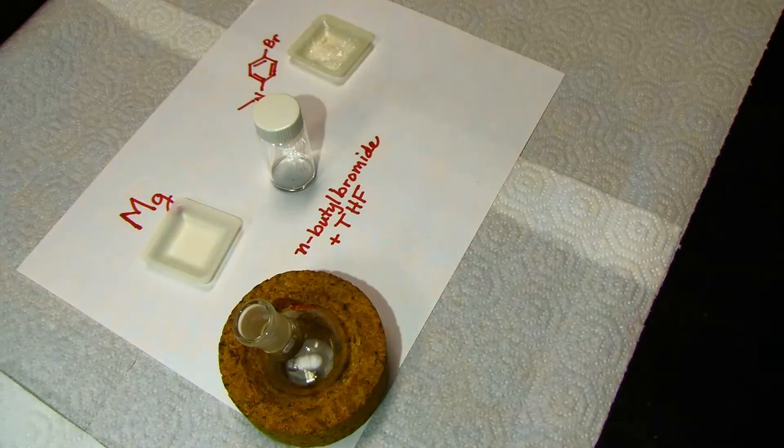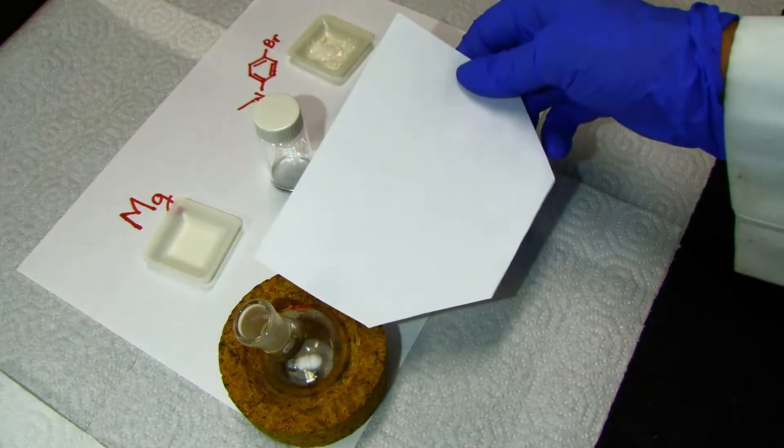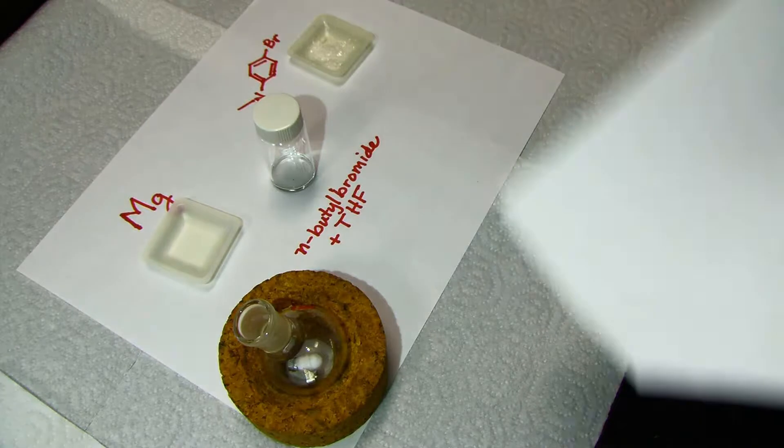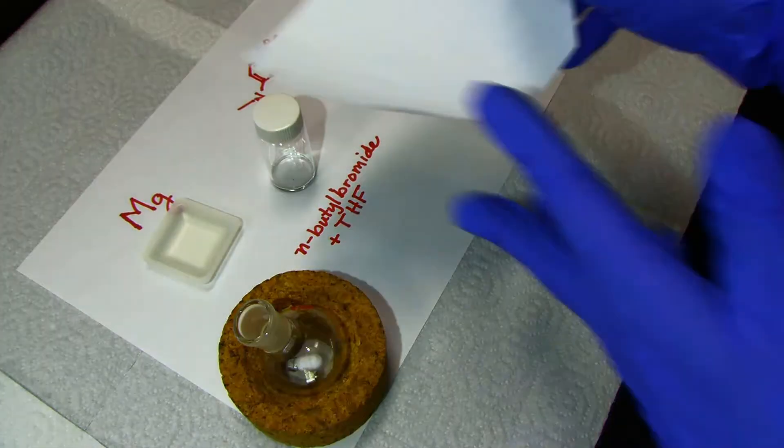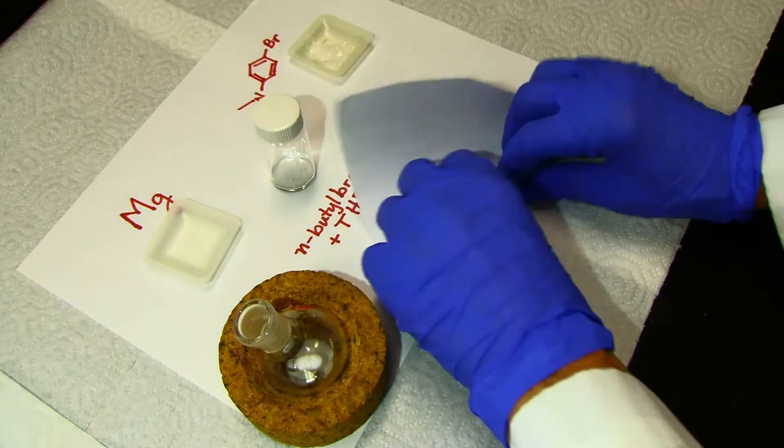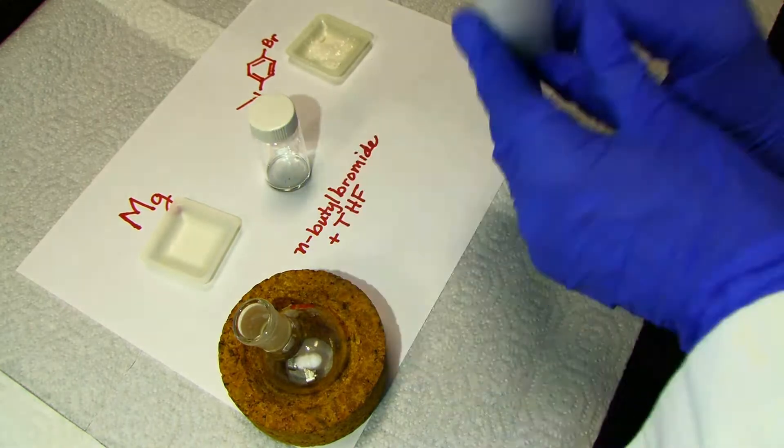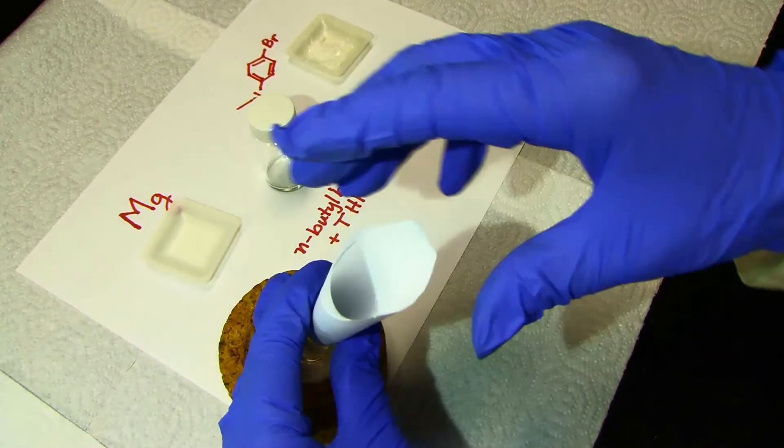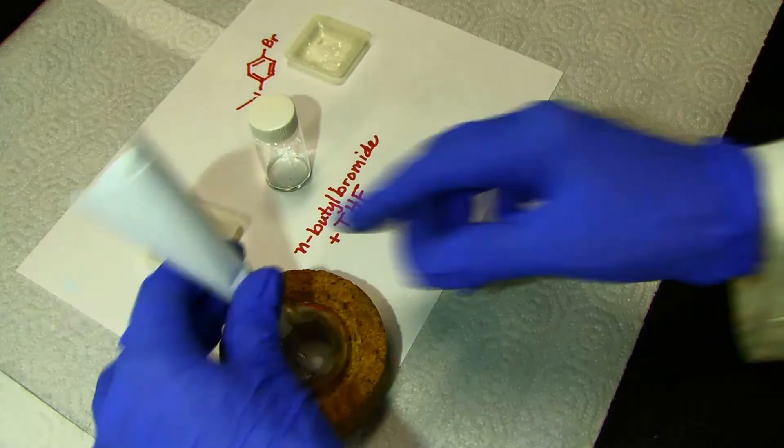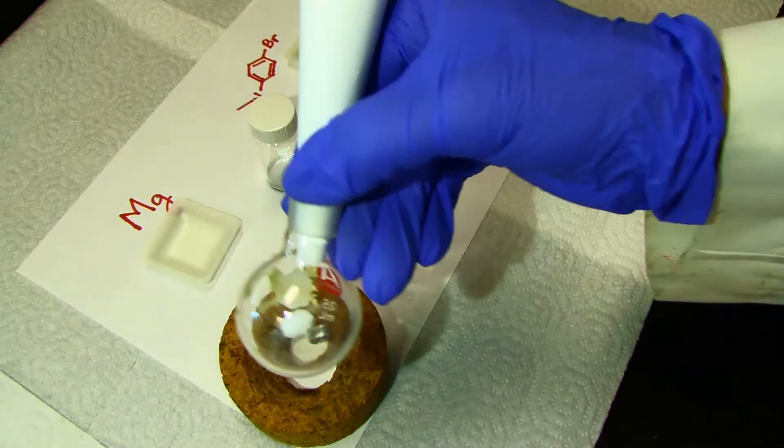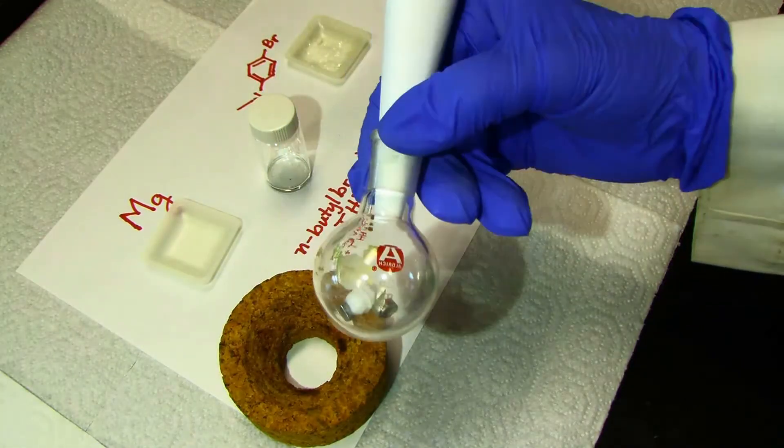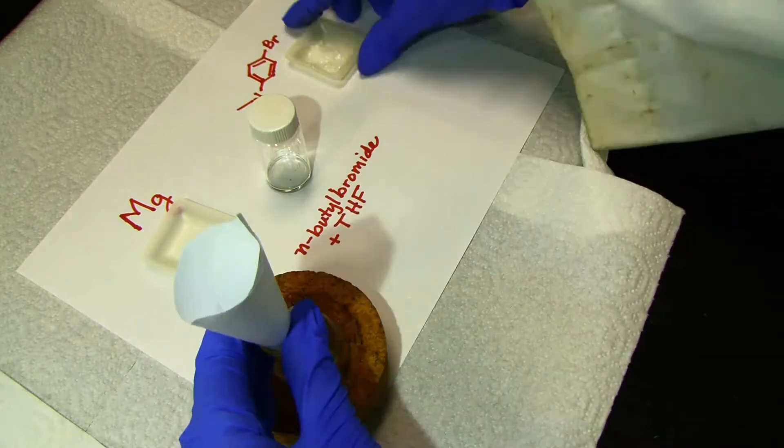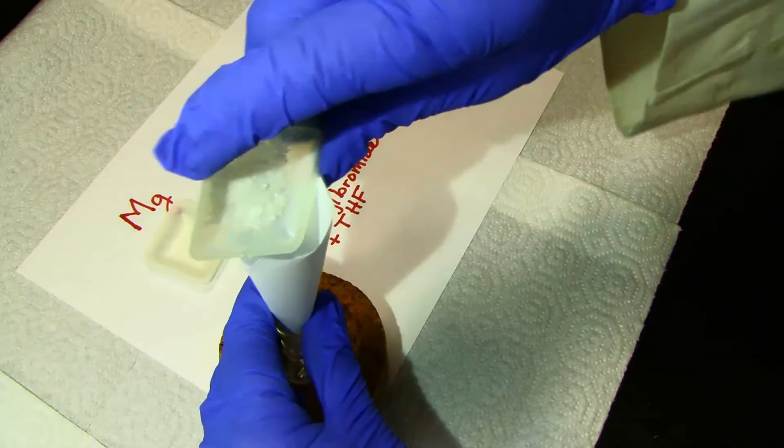My paper funnel, I make out of a piece of paper like that, cut like that, and then roll it. Take it in the flask, check that I've got it down underneath the joint. Then add my solid.